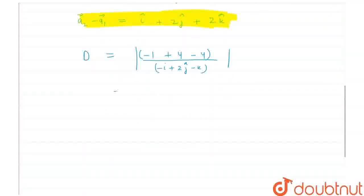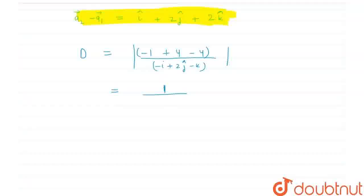It would be equal to 1 divided by the mod of minus i plus 2j minus k. Its mod would be equal to 1 square plus 2 square plus 1 square under root, that would be equal to root 6. So here it would be root 6, therefore the distance would be equal to 1 upon root 6. This is the shortest distance.